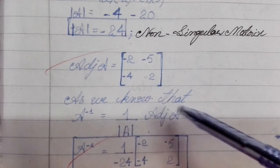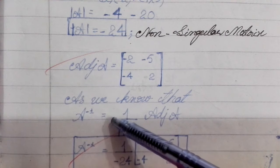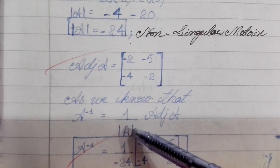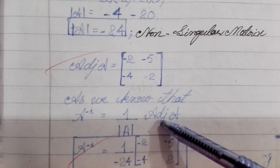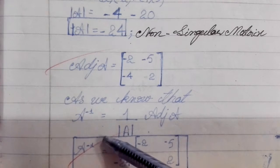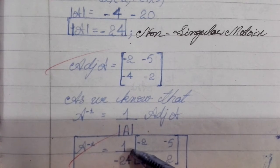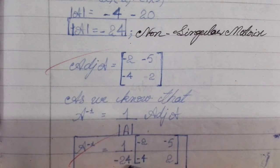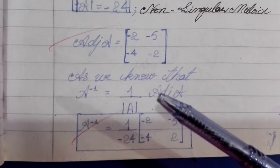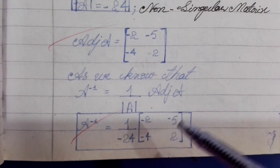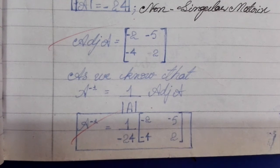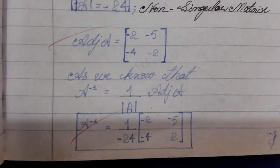As we know, A inverse is equal to 1 upon determinant of A into adjoint A. We will keep the value of the determinant of A as minus 24, and the matrix of adjoint A. Then we will divide into all elements.